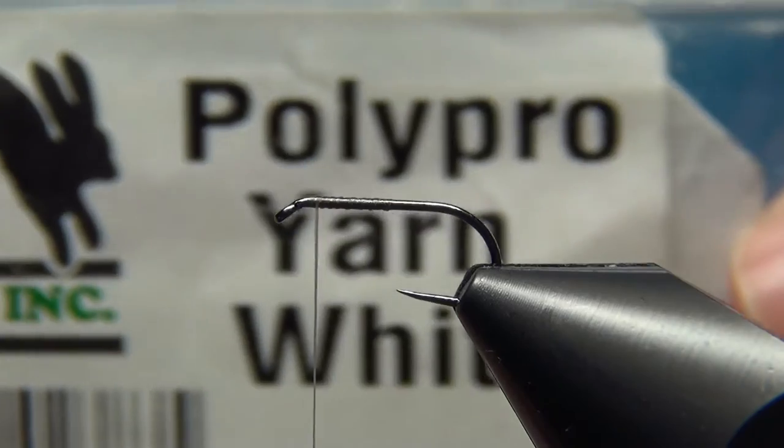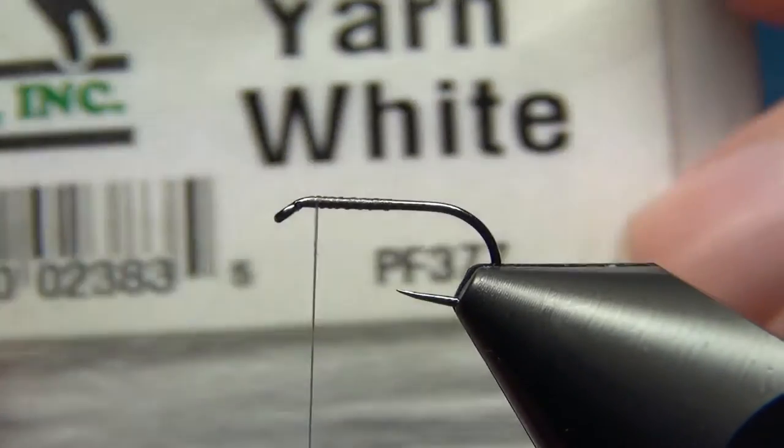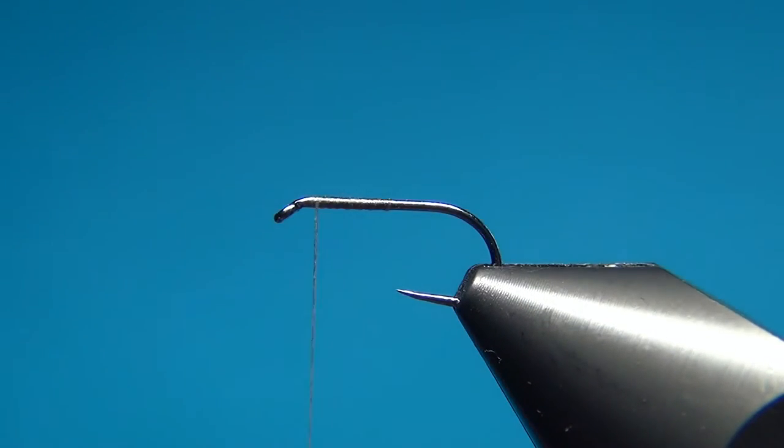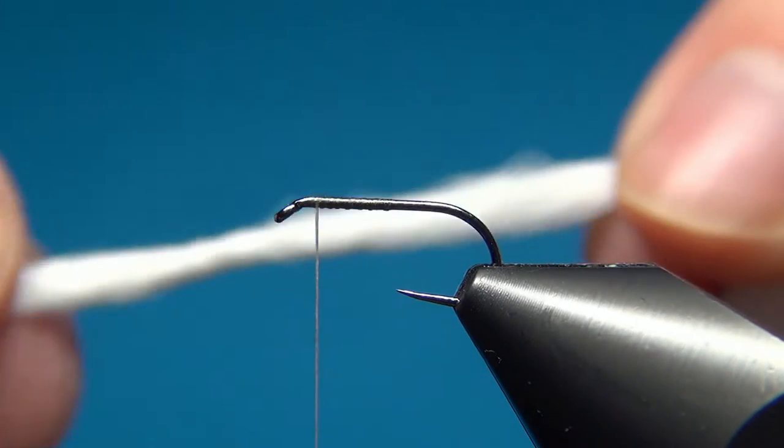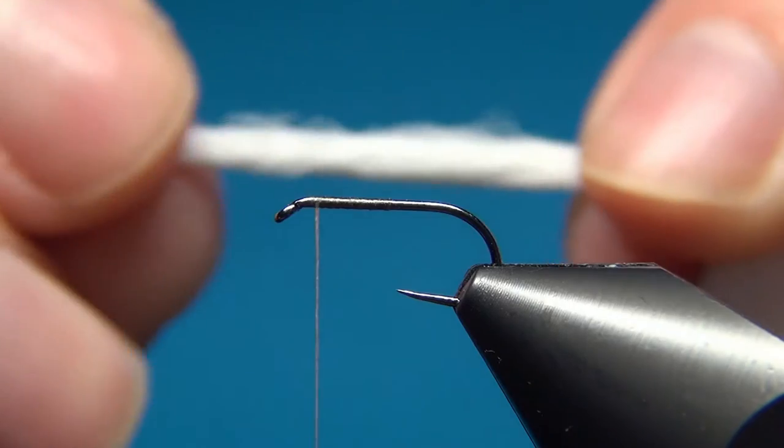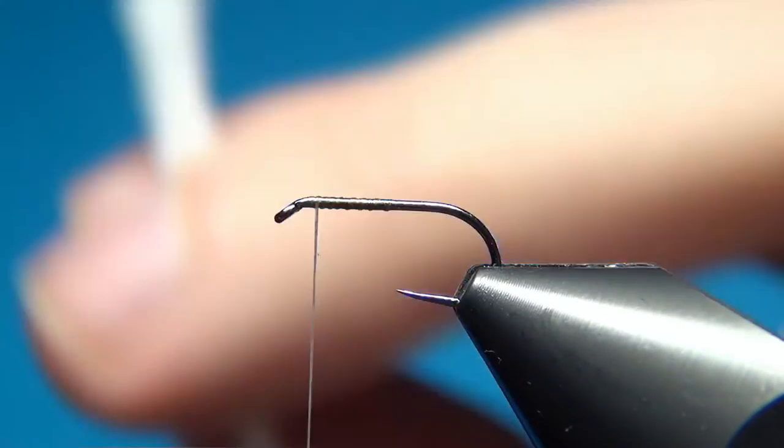The first material that we will tie in is this Polypro yarn in white. For these really small flies, size 16, 18 and so forth, you don't need much at all. So this comes in this quite thick bunch here. I'm going to cut off just a little bit.